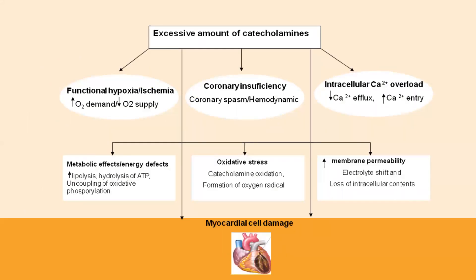Excess amounts of catecholamine can produce various alterations in the myocardial tissue. It produces functional hypoxia or ischemia, which results in increased oxygen demand while oxygen supply decreases — an imbalance between oxygen demand and supply. It can also produce coronary insufficiency, resulting in coronary spasms and hemodynamic changes. Intracellular calcium overload occurs with increasing calcium entry. It can also produce metabolic changes leading to lipolysis, hydrolysis of ATP, and uncoupling of oxidative phosphorylation.